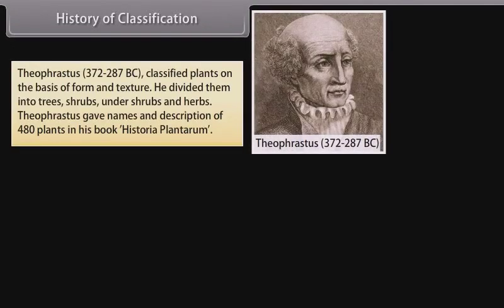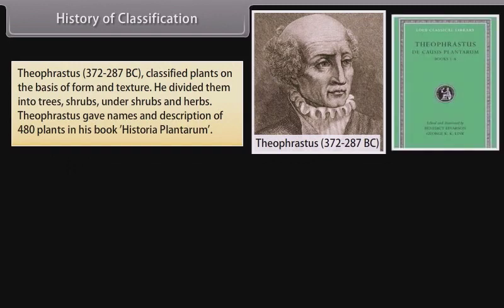Theophrastus (372–287 BC) classified plants on the basis of form and texture. He divided them into trees, shrubs, undershrubs, and herbs. Theophrastus gave names and descriptions of 480 plants in his book Historia Plantarum.